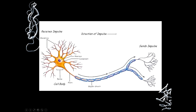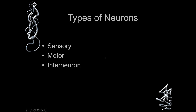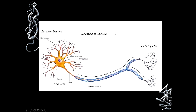Dendrites are located near the cell body, while axons take messages away from the cell body. Between these, we have a transmitter known as the myelin sheath. There is also the soma, and at the center we can see the nucleus. The cell soma consists of a nucleus and cytoplasm, where cytoplasm is the outer area outside the nucleus.